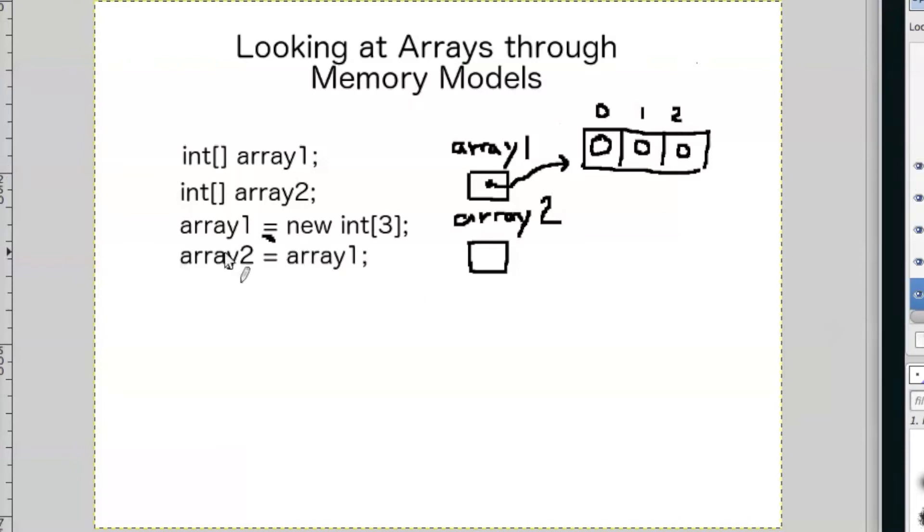So now if we do this line of code, so what that's going to do is going to make array2 point to whatever array1 is pointing to. So now they're both pointing to the same array.